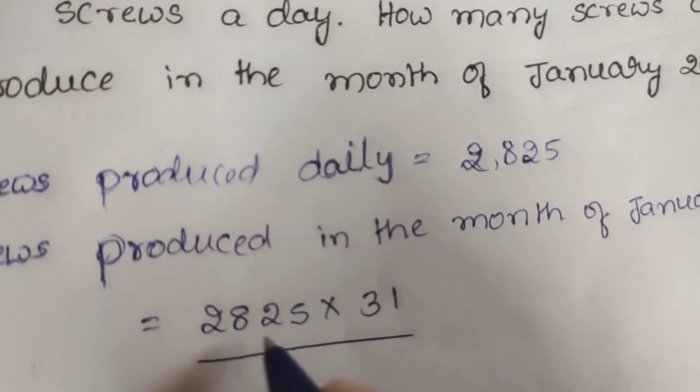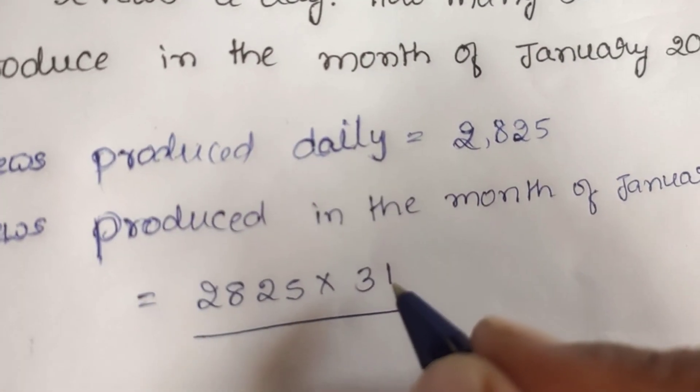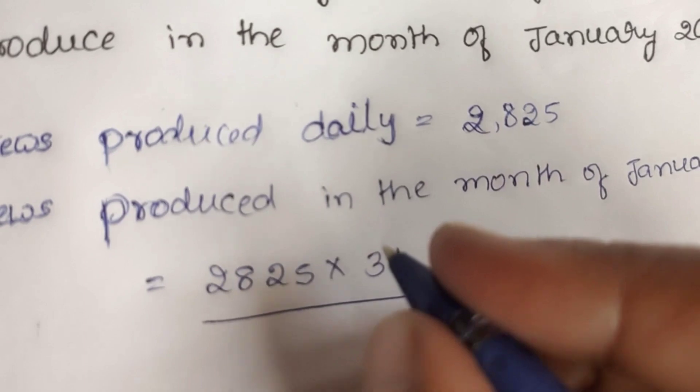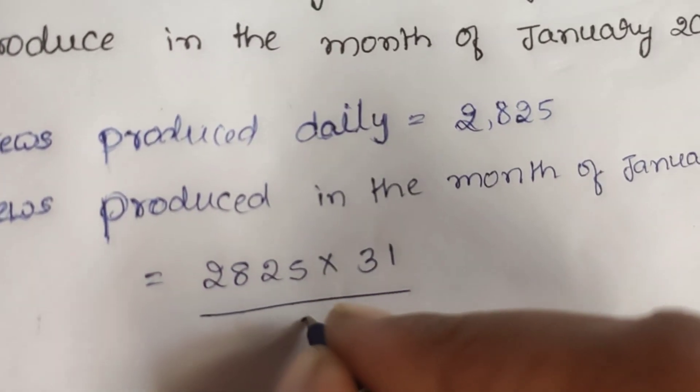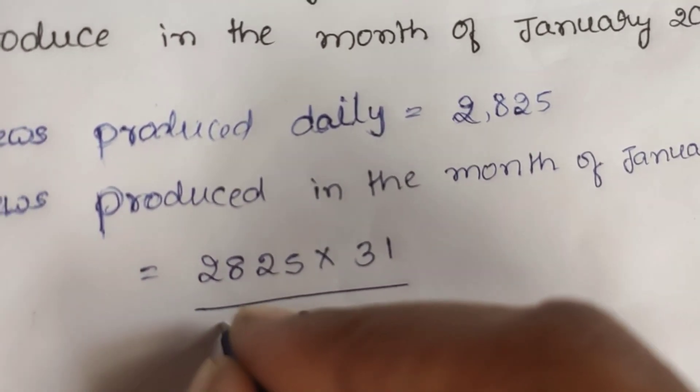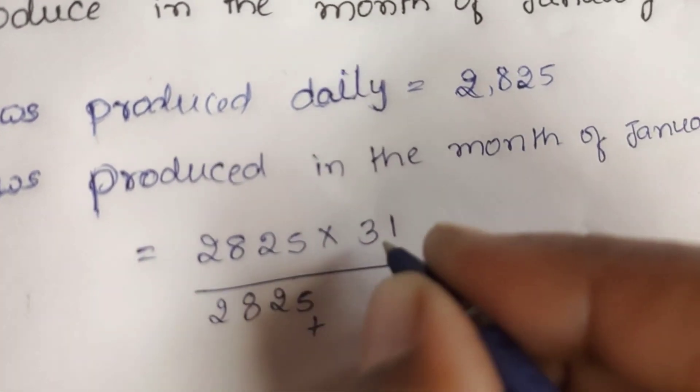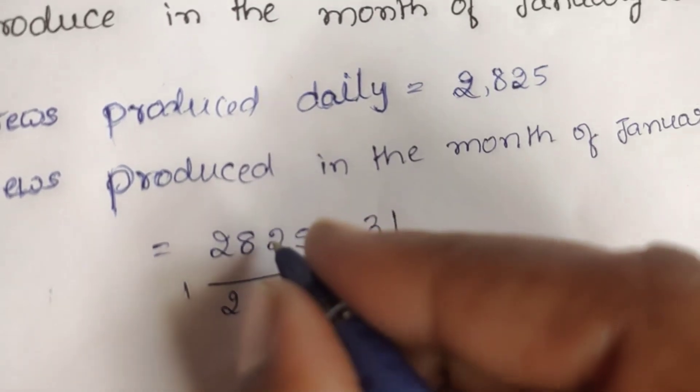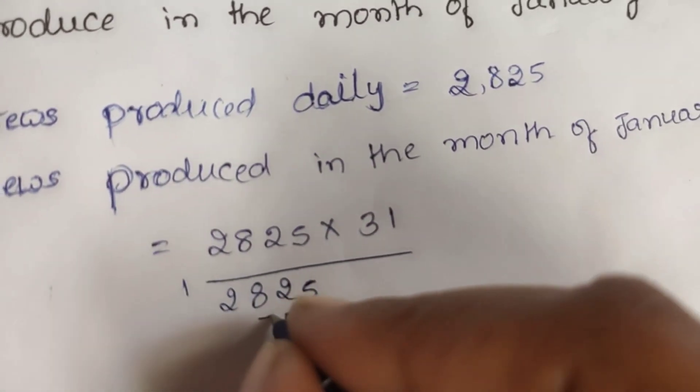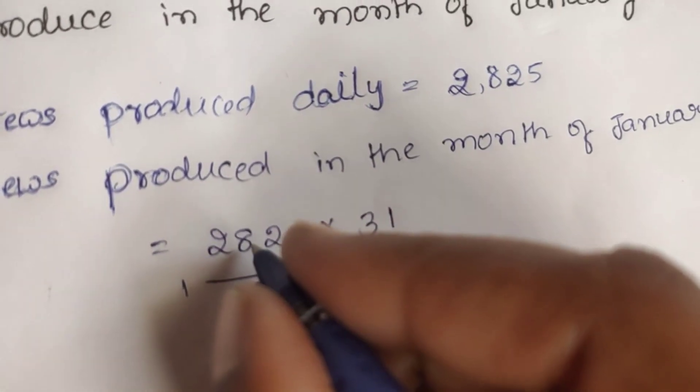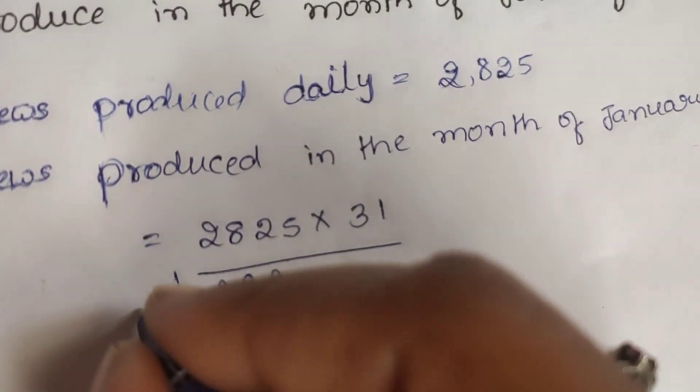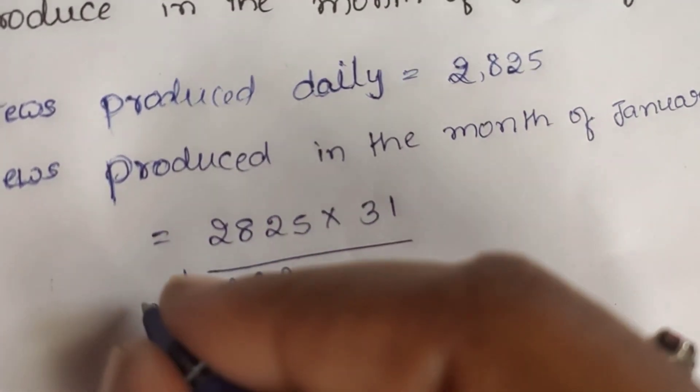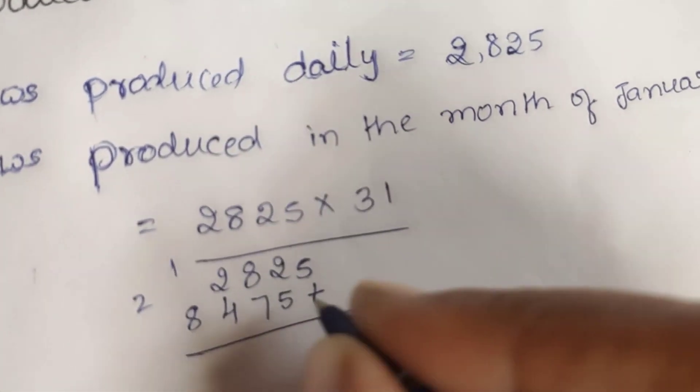So, daily screws produced, 31 days total is produced. So, 1×5 is 5, 1×2 is 2, 1×8 is 8, 1×2 is 2 plus 3×5 is 15, 1 carry, 3×2 is 6, 6 plus 1 is 7, then 3×8 are 24, 3×2 are 6, 6 plus 2 is 8.